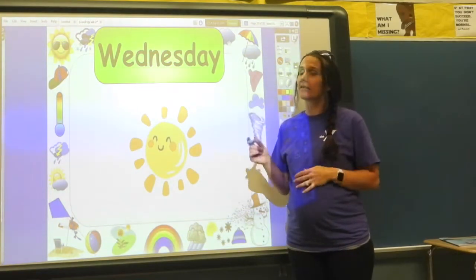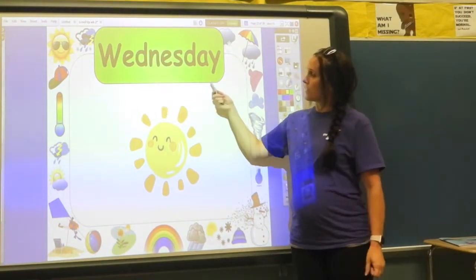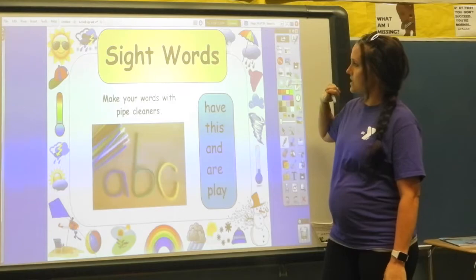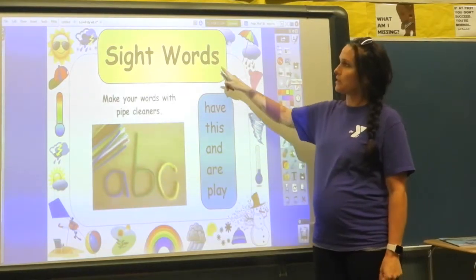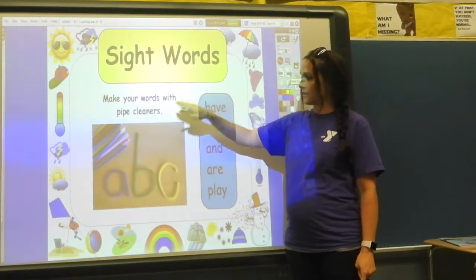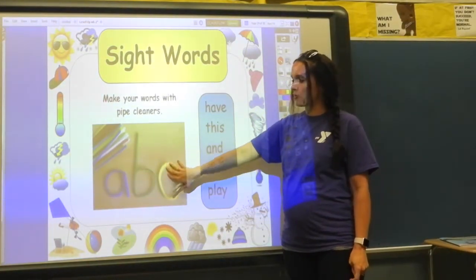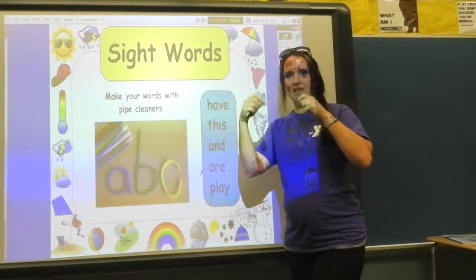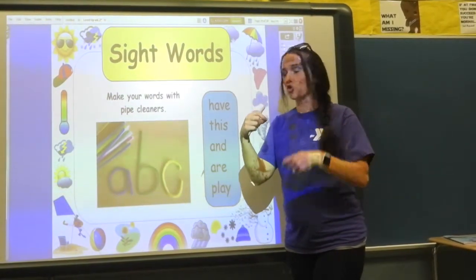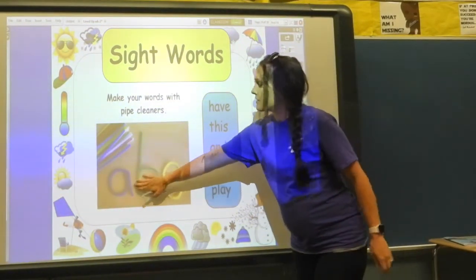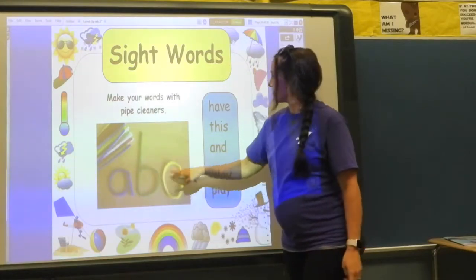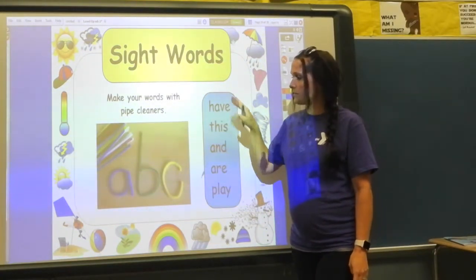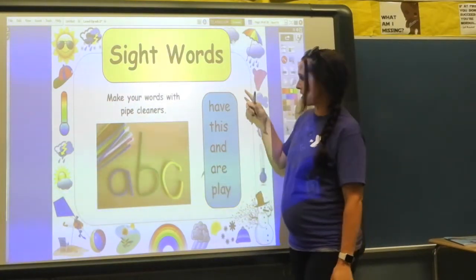Hi guys and welcome back to Level Up. It is Wednesday, we're still talking about weather this week but we're going to do our sight words again. You need to get in your bag and get out your pipe cleaners. Remember, your pipe cleaners are the fuzzy bendy things that look like straws, and you're going to make them into the letters to spell out your words. If you need to pause the video, make sure you do.